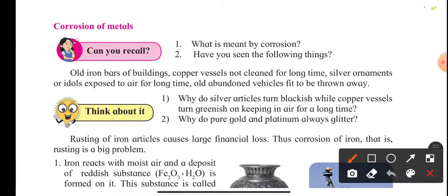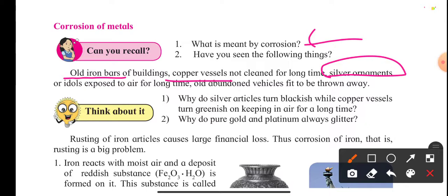Corrosion of metals — in our language it is called 'zanglagna'. Have you seen old iron bars on buildings left on terraces? They catch rust. Copper vessels turn greenish in color. Silver jewelry or silver coins become blackish. Silver articles become blackish and copper vessels turn greenish due to their exposure to air over a long time.